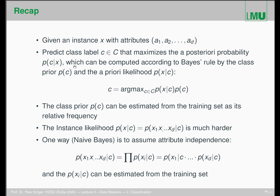Given an instance with attributes, we want to predict the class label — specifically, that class label that maximizes the posterior probability: the probability of class c given the observation x. This can be computed according to Bayes' rule from the class prior and the a priori likelihoods. The decision rule is: we take the class prior times the a priori likelihoods of an observation x given class c.